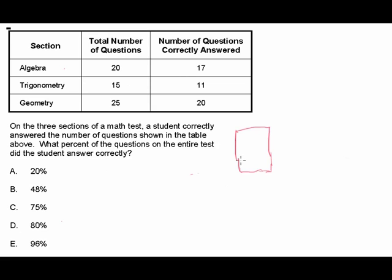Let's let this rectangle represent the math test. There are three sections: algebra, trigonometry, and geometry. So let's draw sections here — section one is algebra, section two is trigonometry, and section three is geometry.